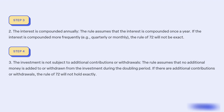Condition 3: The investment is not subject to additional contributions or withdrawals. The rule assumes that no additional money is added to or withdrawn from the investment during the doubling period. If there are additional contributions or withdrawals, the rule of 72 will not hold exactly.